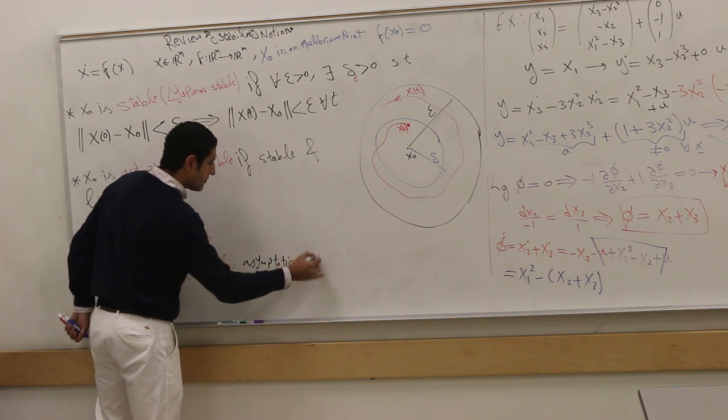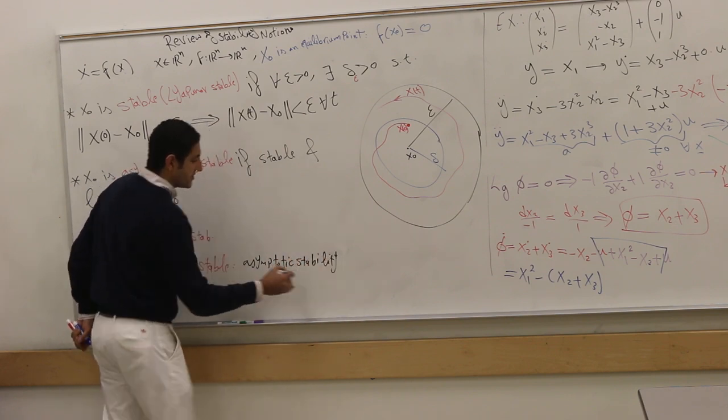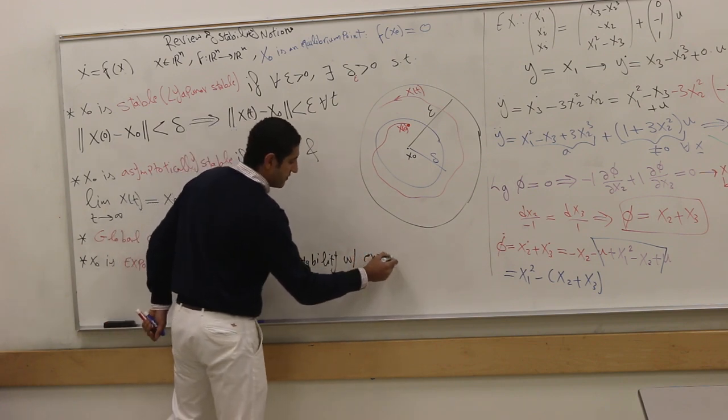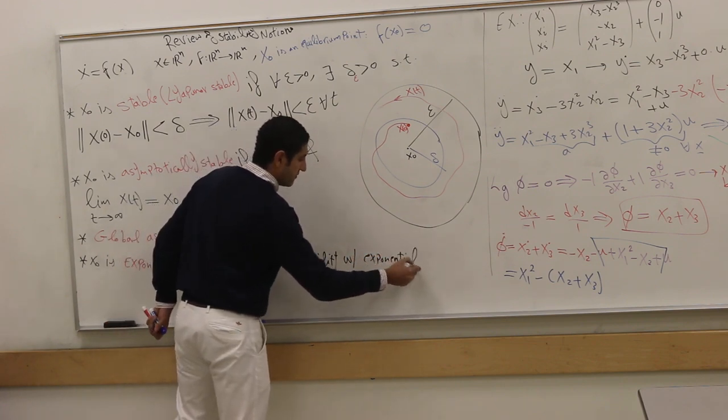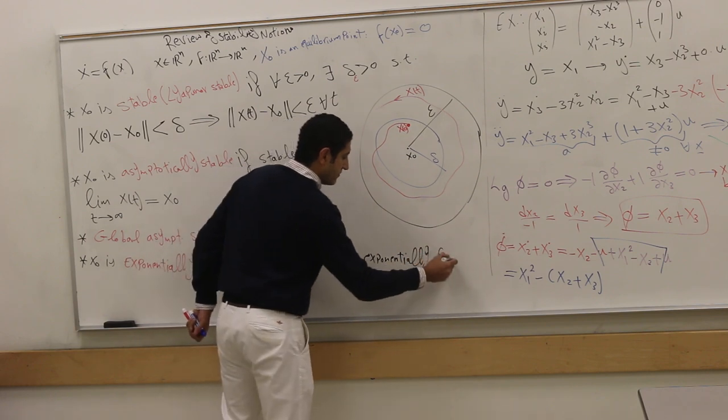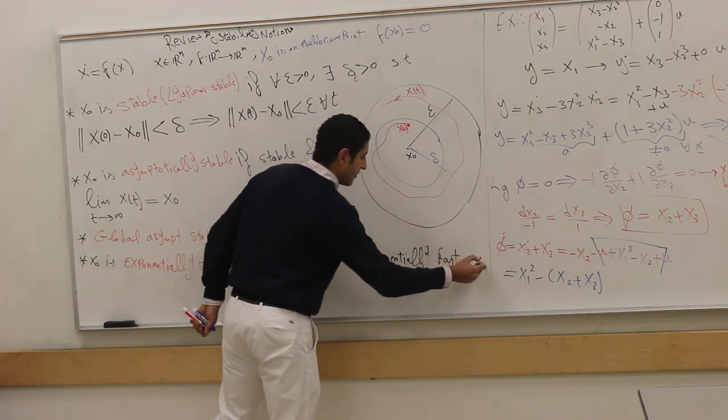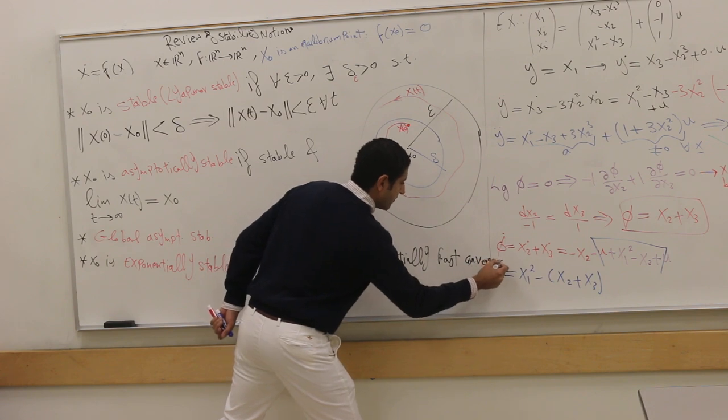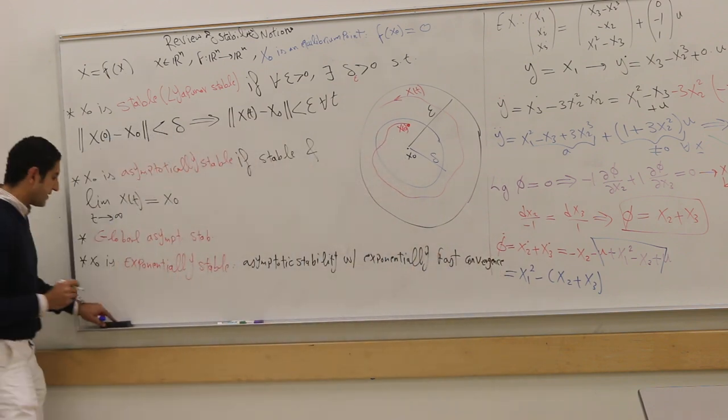So we got to converge. Asymptotic stability. But fast enough with exponentially fast convergence. Convergence rate. Exponentially fast convergence.